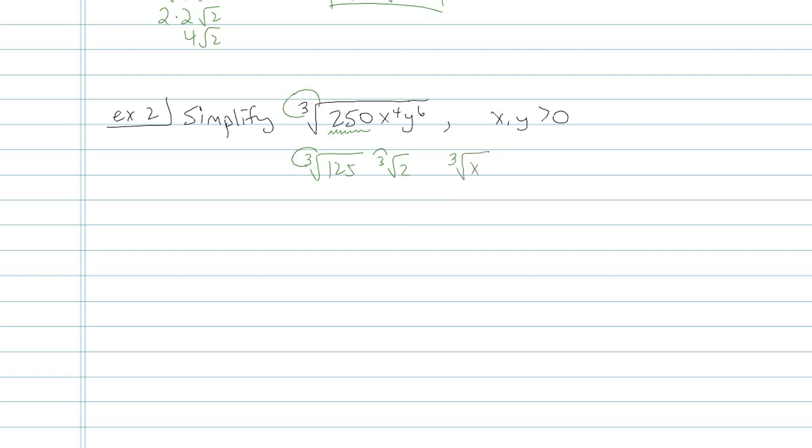Then I have cube root of x to the third, cube root of regular old x, and then that y to the sixth, I'm going to split it up as cube root of y to the third, cube root of y to the third. All of these things are being multiplied together, so let's go through and simplify. Cube root of 125 is 5, cube root of 2 can't simplify that. Cube root of x to the third is x, cube root of x can't be simplified. Cube root of y to the third is y, cube root of y to the third again is y. Let's rearrange all that.